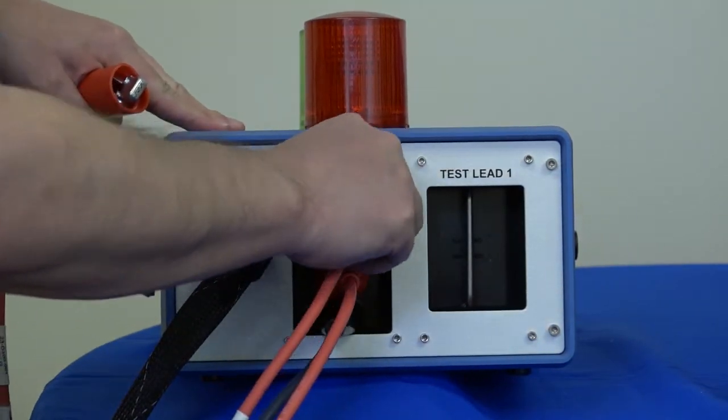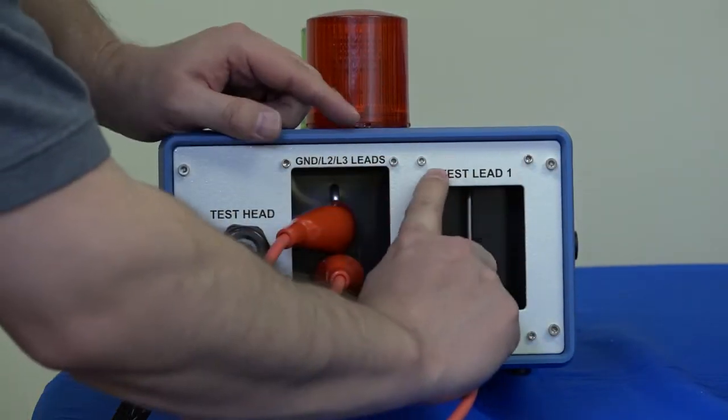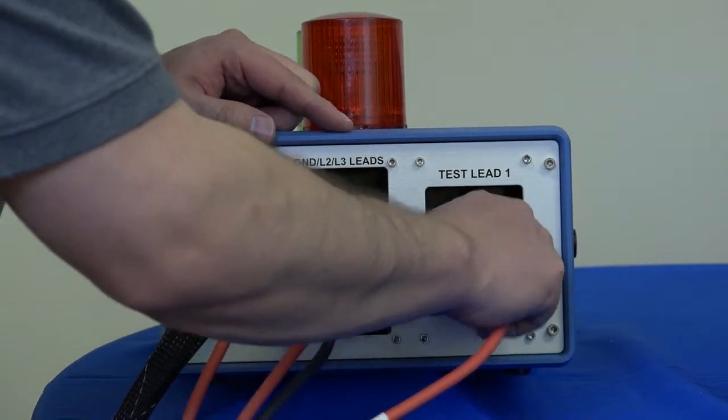Remember your leads are labeled 1, 2, and 3. And then test lead 1 where the active voltage is going to come through will connect to test lead 1 bar over here like that.